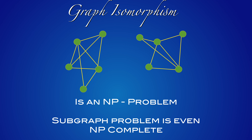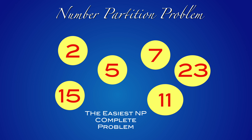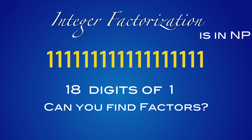Here's an example of a concrete problem in NP: deciding whether two graphs are isomorphic. A harder problem is deciding whether a given graph is a subgraph of a second graph — this is NP-complete, meaning if we could solve this effectively we could solve all NP problems and prove P equals NP. Another NP-complete problem is the integer partition problem: given a group of integers, find the best division into two groups to make the sums as close as possible. Integer factorization is also in NP — you can verify quickly if you know the factors, but it's believed to be hard to find them.